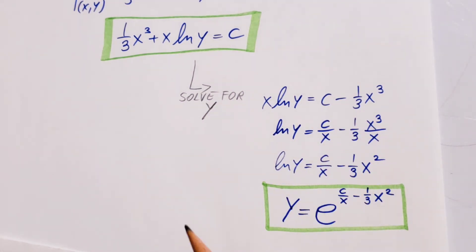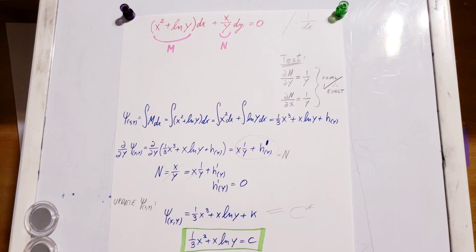We can trace it down, and we're going to get a y that is equal to e to the power of c over x minus 1 third x squared. Now, remember, like I said in the beginning of the video, I ran over very fast just the solution of this problem here.